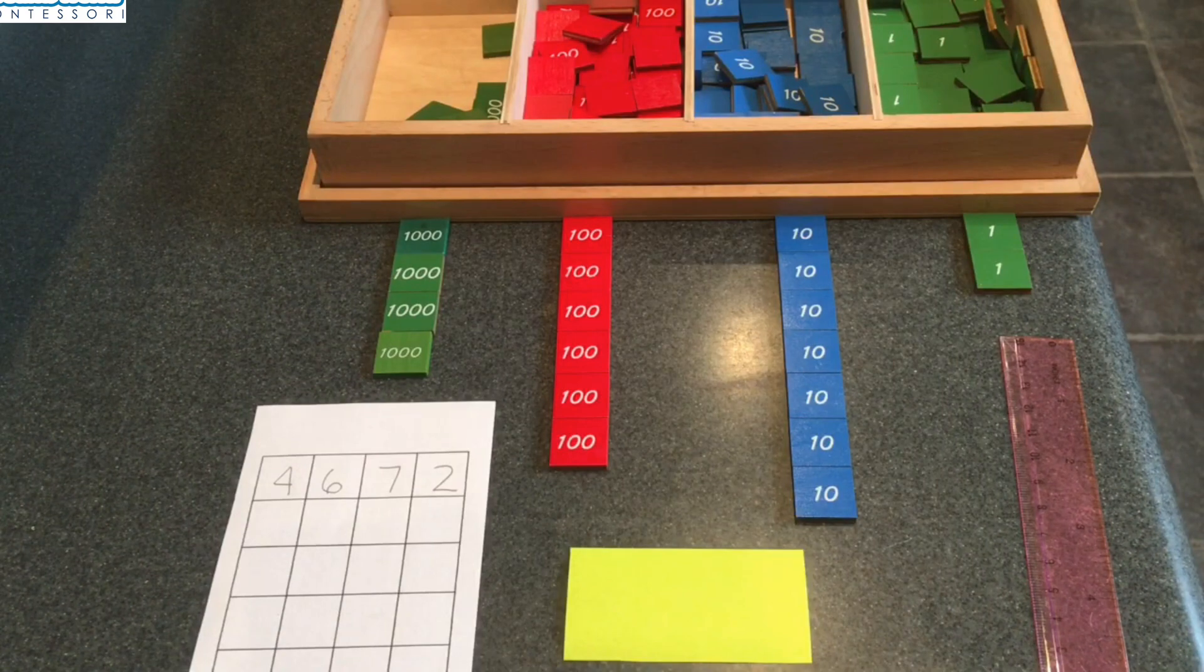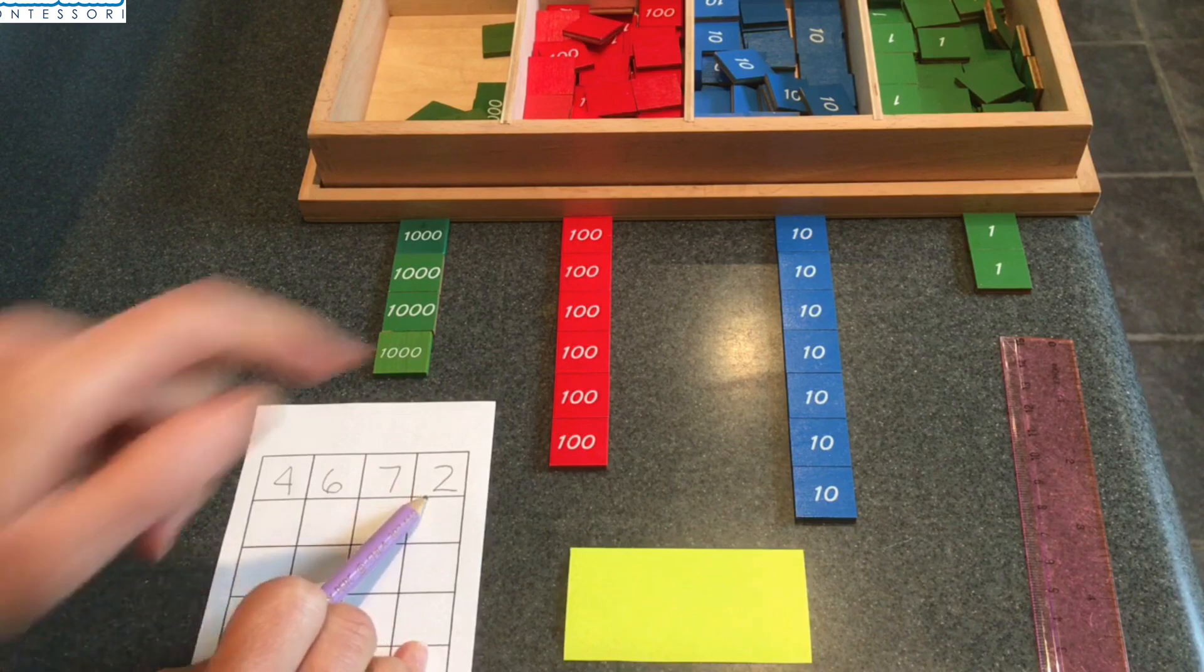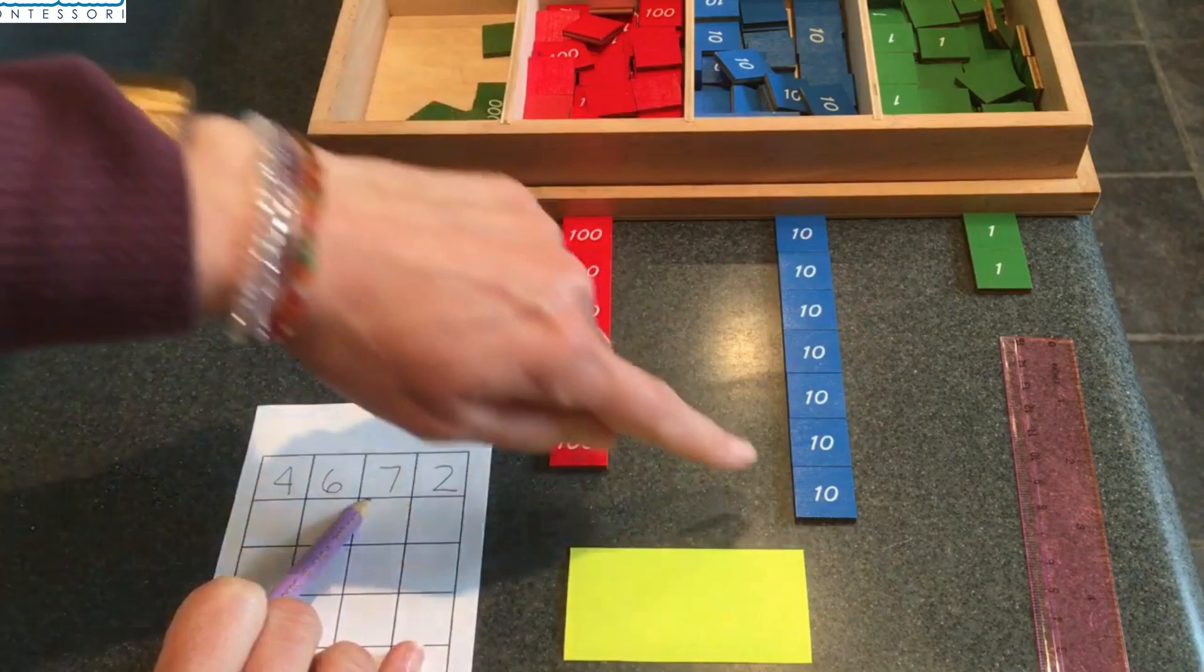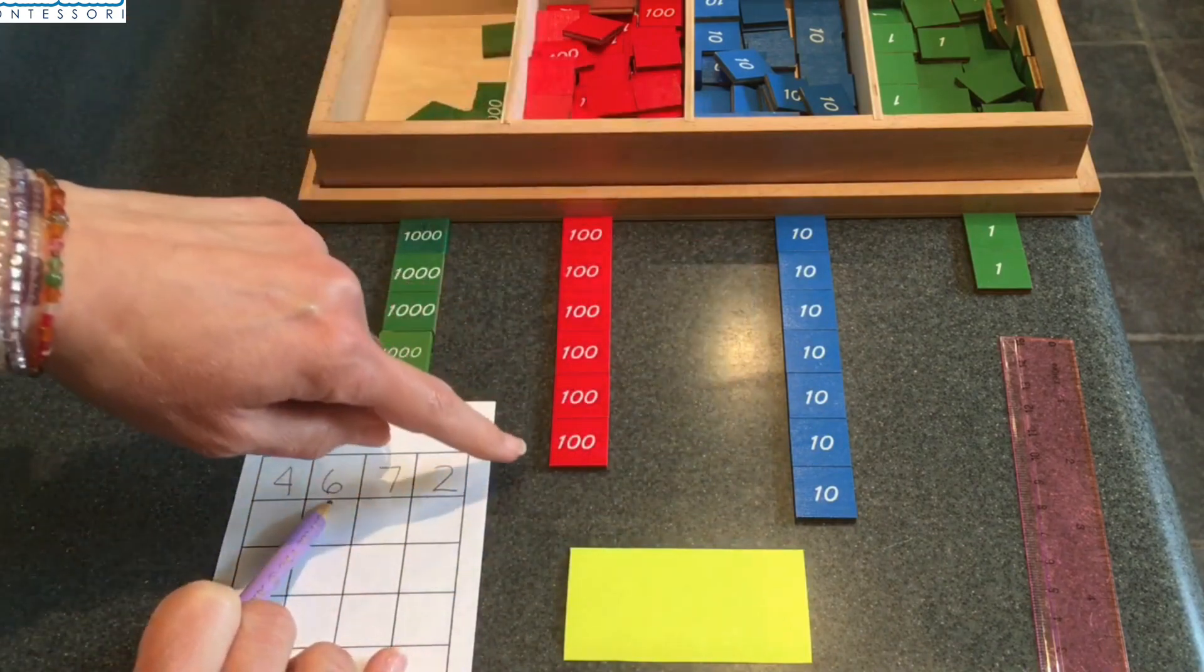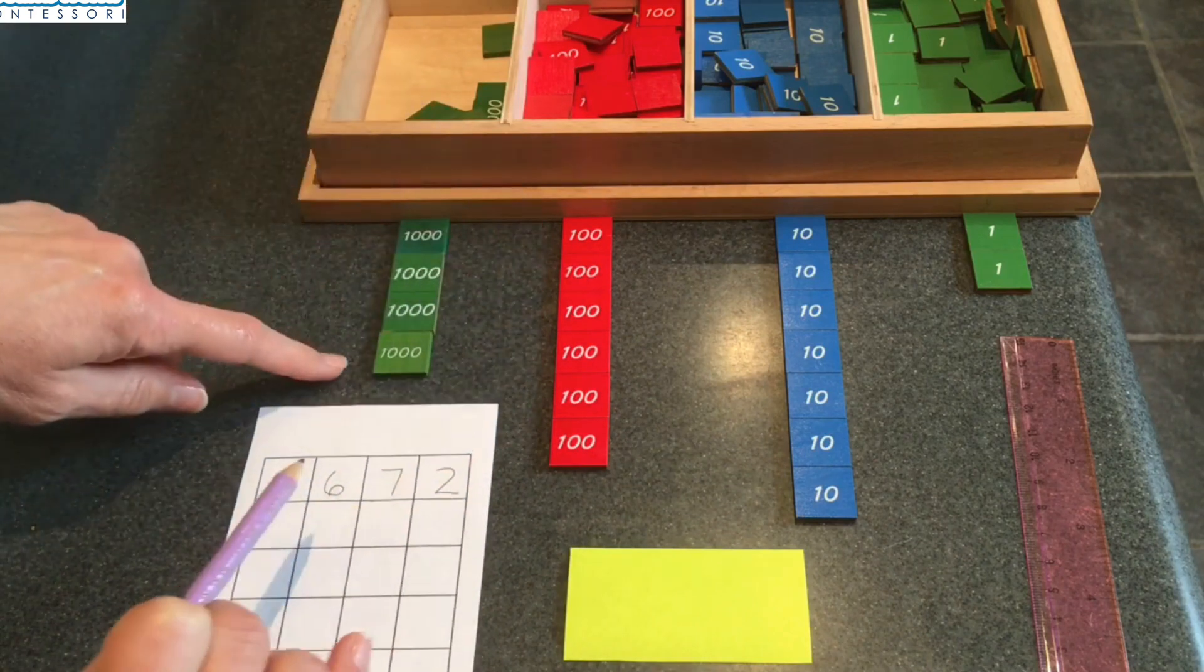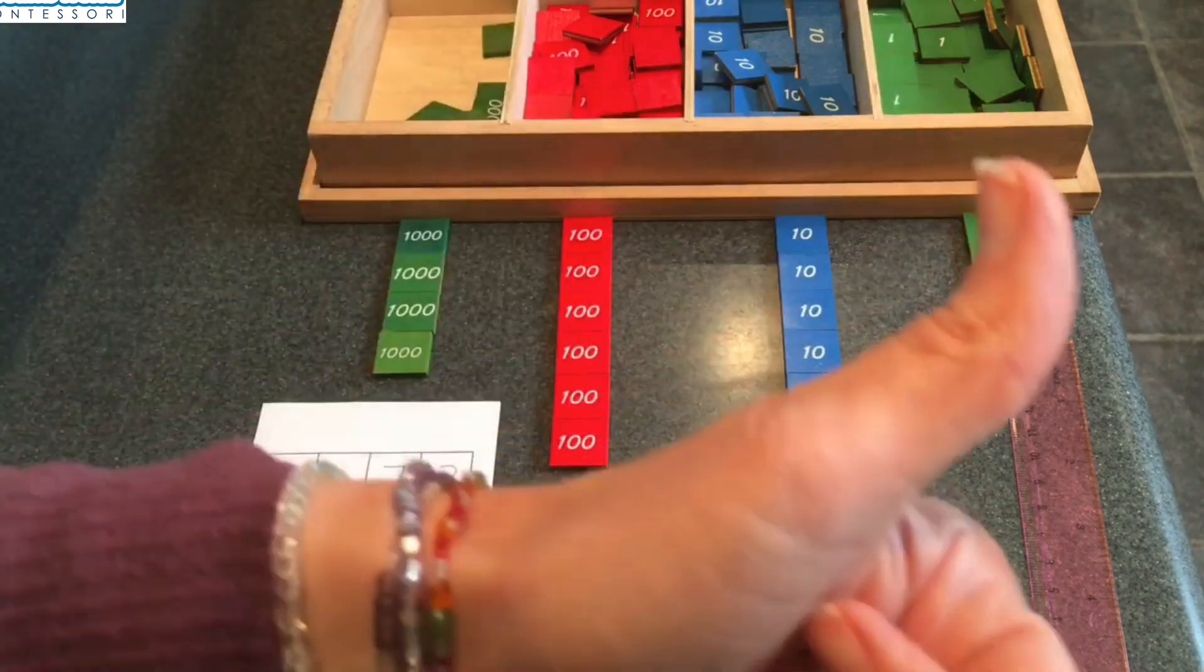Alright, I built my quantity. Hopefully you did too. Let's check our quantities. We needed two units. One, two. Yep. Seven tens. One, two, three, four, five, six, seven. Six hundreds. One, two, three, four, five, six. And four thousands. One, two, three, four. You've got it.